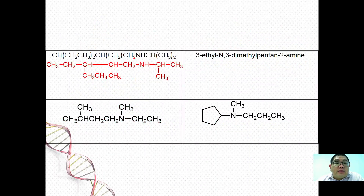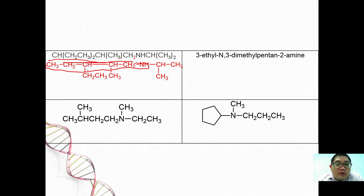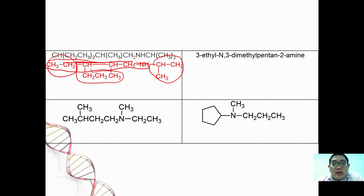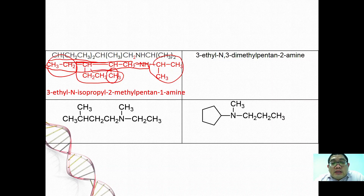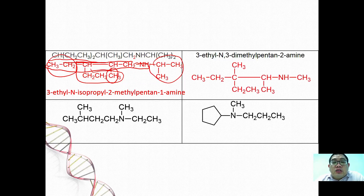For secondary amine examples: the longest carbon chain attached to the nitrogen has 6 carbons. With an isopropyl and an ethyl group also on nitrogen, and a methyl at C2 on the chain, the full name is 3-ethyl-N-isopropyl-2-methylpentan-1-amine. Another secondary amine example is named 3-ethyl-N,3-dimethylpentan-2-amine, with the structure showing those substituents on nitrogen and the chain.